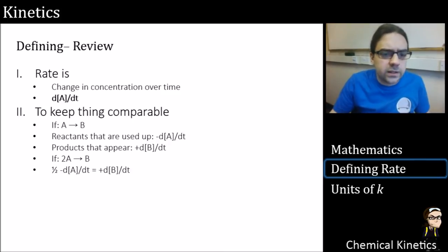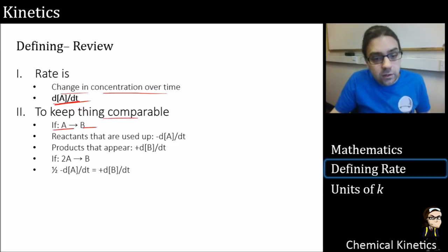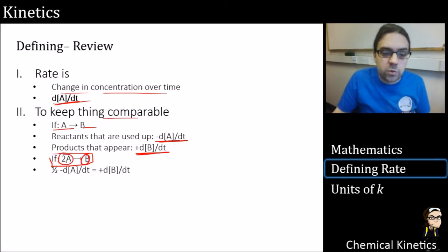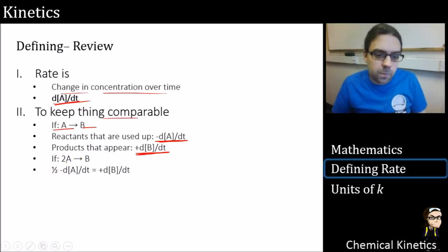Just to review, the rate is the change in concentration over time or dA by dt, which comes from differentiation. That is a gradient of its change over time. To keep things comparable, if A goes to B, then the reactions that are used up are minus dA by dt, the products that appear are plus dB by dt. If they're not equal, if two of these go to one, say it out loud, this happens at twice the rate of B. So we must half that in order to get plus B.